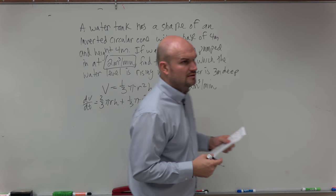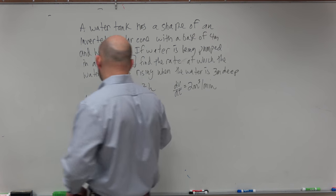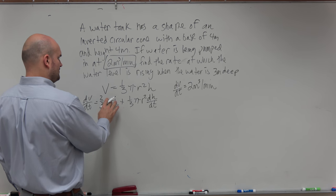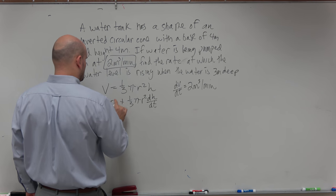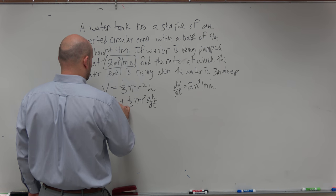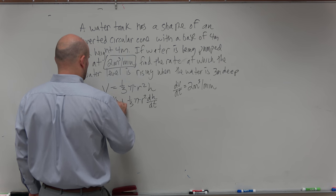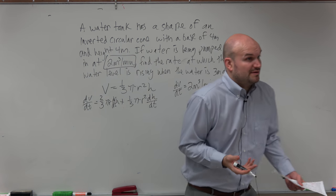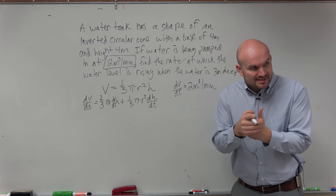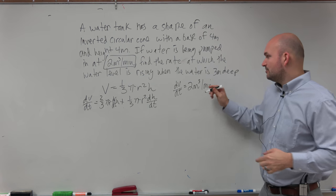So dV/dt was equal to one-third pi, or it was two-thirds pi r h dr/dt plus one-third pi r squared dh/dt, right? So that's what happened when we took the derivative. We had to use the product rule. But there's an issue with this, because when you guys start plugging in, we know dV/dt.